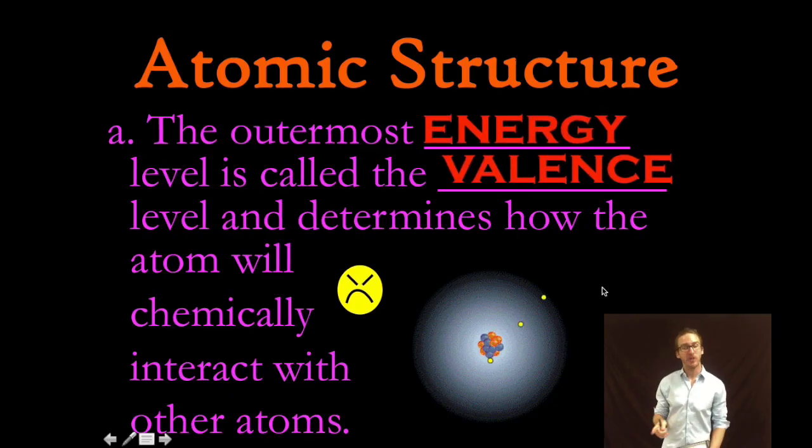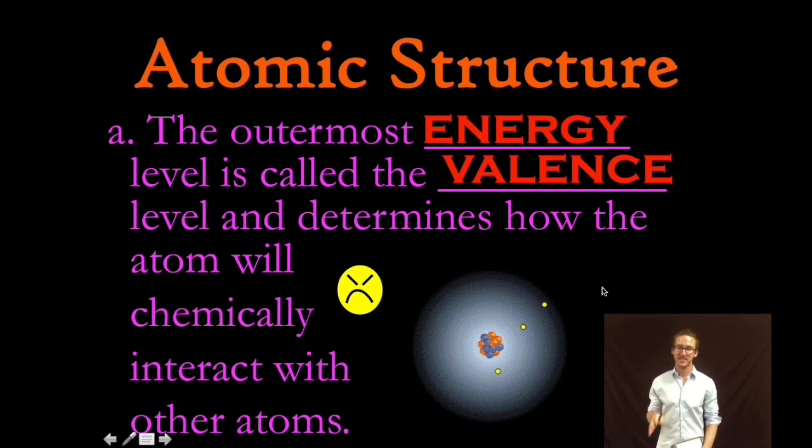You should know that the outermost level is called the valence level and that will determine how the atom will chemically interact with other atoms. Very much like your skin is the outermost level of your body and that is the area that interacts first with the surroundings. We'll talk more about the idea of orbitals and energy levels when we get to the next unit and we focus on the electron cloud there.